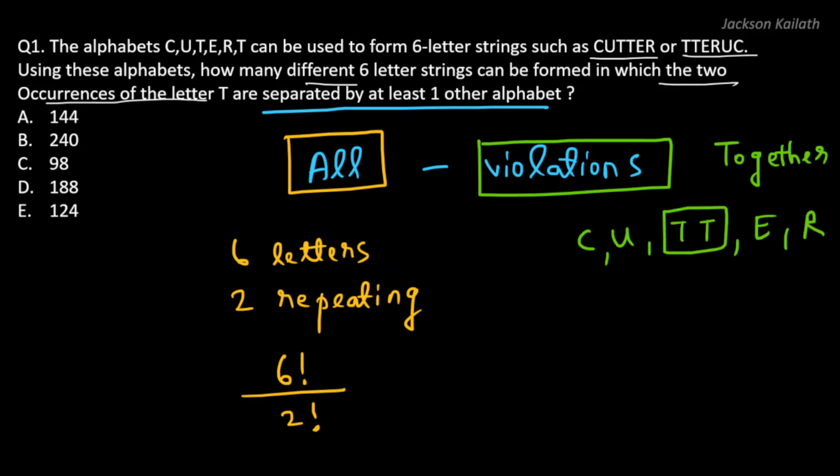So let's take them together. That would be C, U, and then the two Ts taken as one entity, and then we have E and R. So this is nothing but having 5 unique items, and all of them are different. So if you have five items and you want to arrange them, then the number of ways in which you can do that is n factorial, or in this case, 5 factorial.